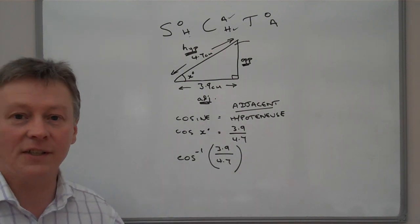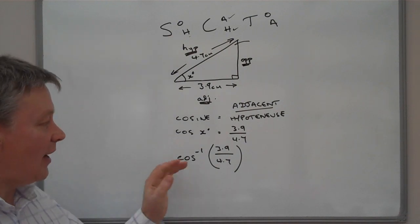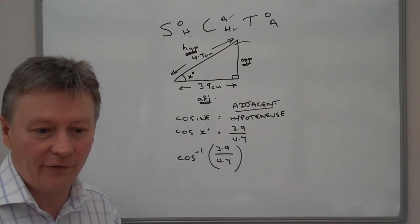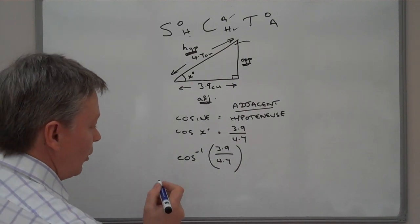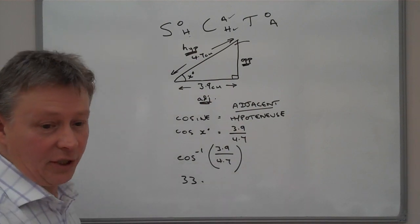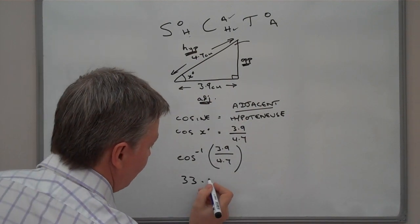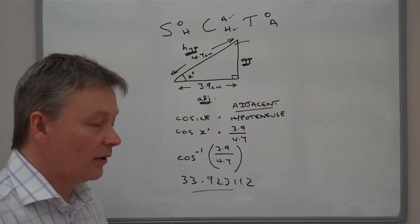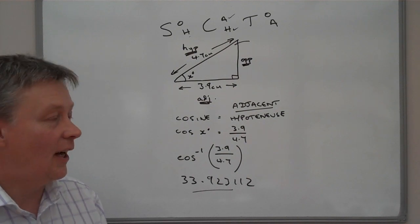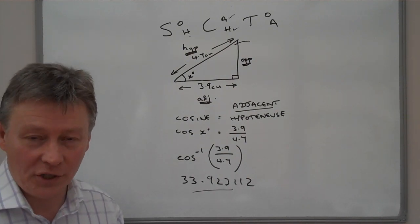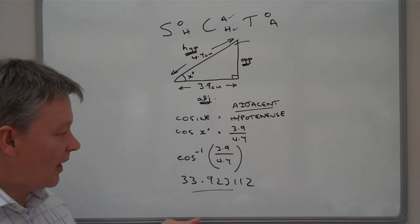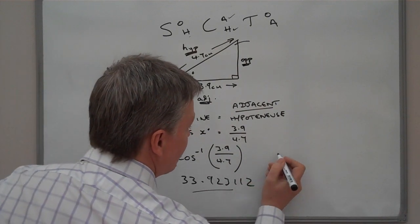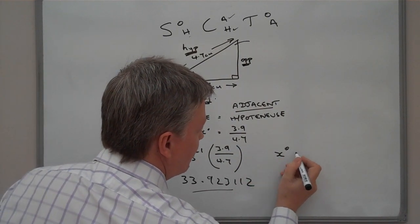If we did that and push that into the calculator, that will give us the value of x degrees. The value of x degrees that I have is 33.923112, so that's the angle of x. I think for the purposes of most questions at this sort of level they will ask you to do it to one decimal place, so to one decimal place the value of x degrees will equal 33.9 degrees, and that will be the answer to this particular question.